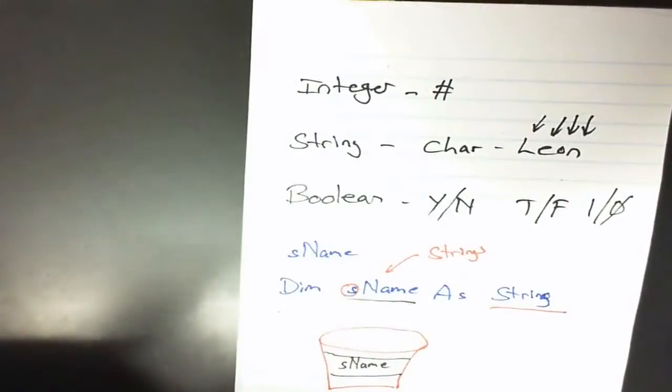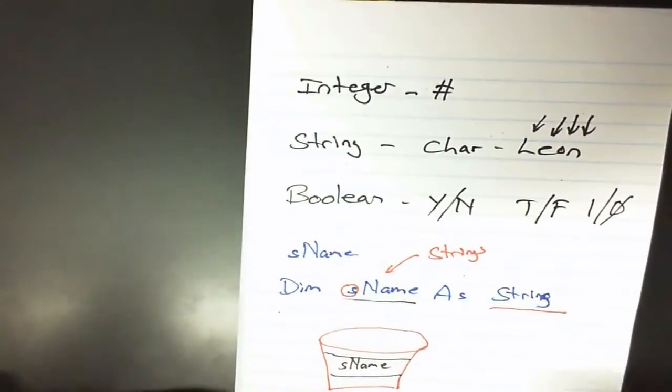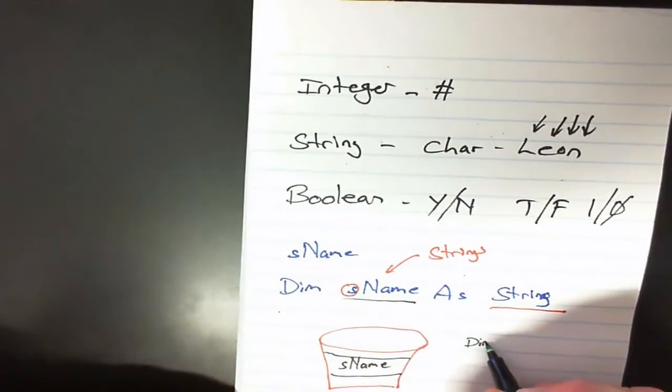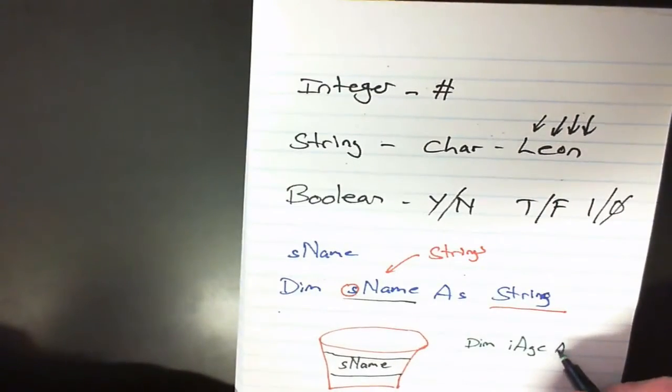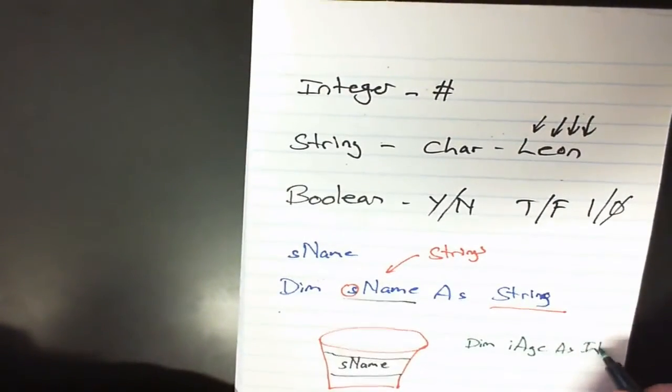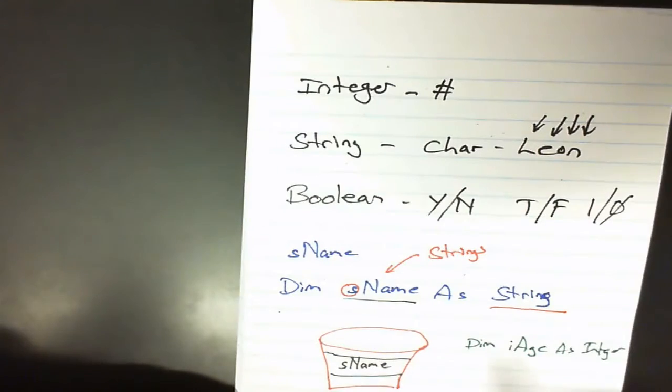If I was to declare an integer such as age, I would go dim iAge as integer. This will declare a variable iAge, its type will be integer, and we'll know it's an integer because of the small i at the front. You'll also notice that I'm using camel case because I'm using a lowercase i then a capital A.